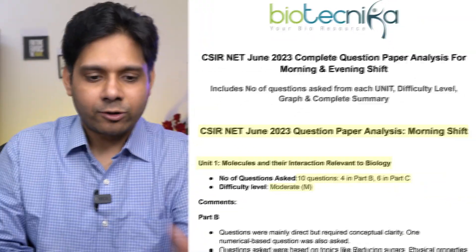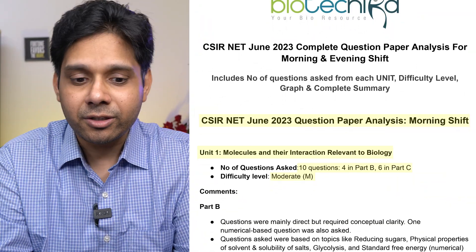Be sure to watch this entire video step by step. Have a notebook and paper ready, and at the end I will give you this entire PDF for download — you can print it and keep it with you so that when you are studying any unit, you can see how many questions came, what the difficulty level was, and from which part — Part A, B, or C — that unit had more questions. Now, we will start with the morning shift, Unit 1: Molecules and Interactions Relevant to Biology.